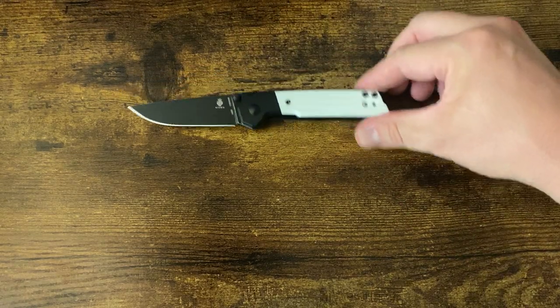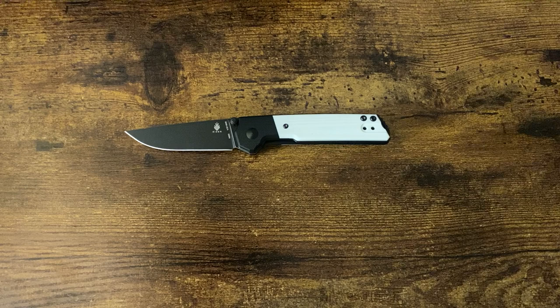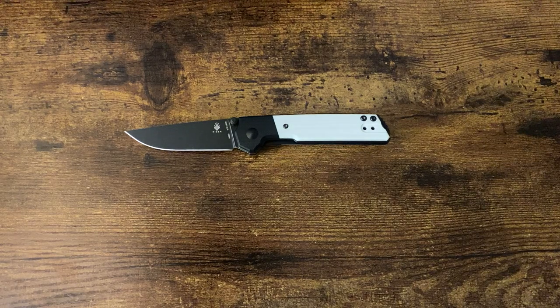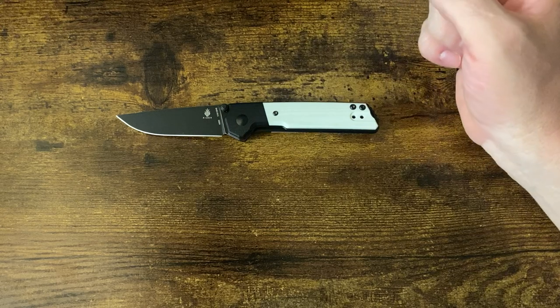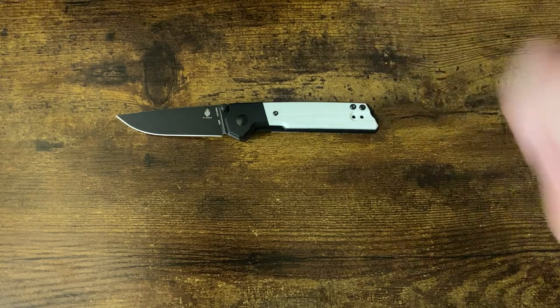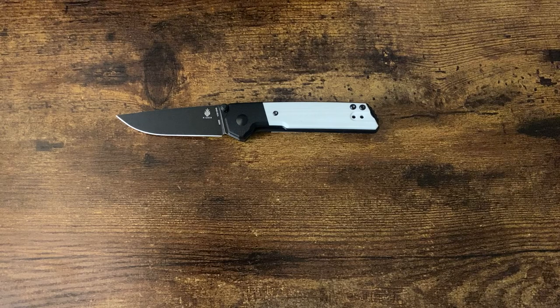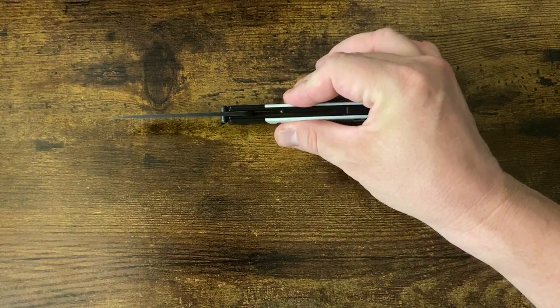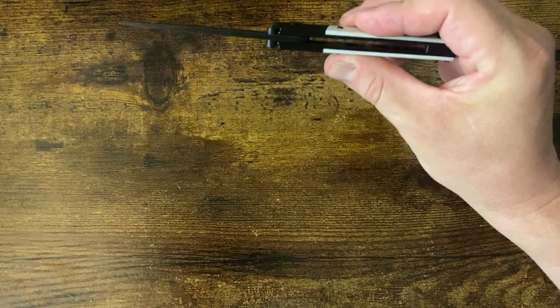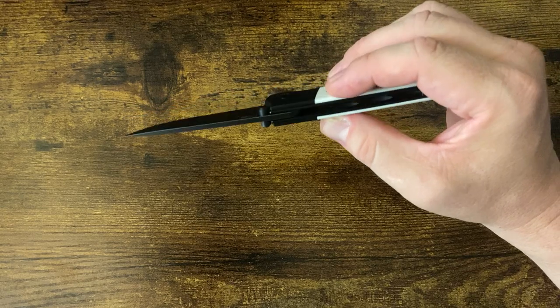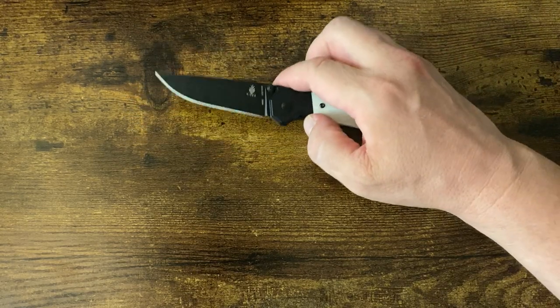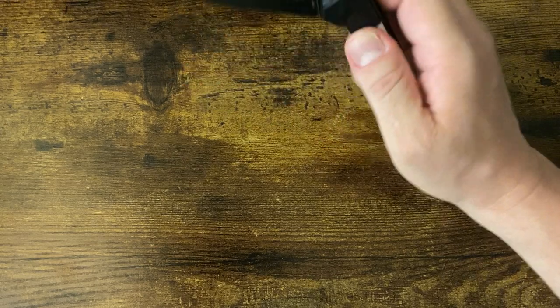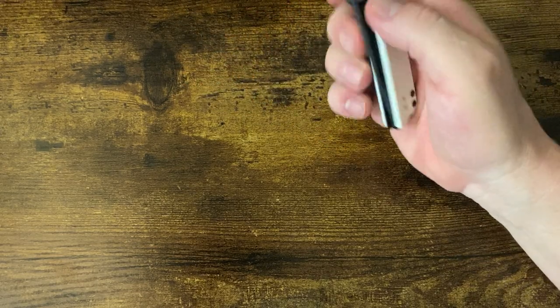Quick specs here: 6 7/8 inches long, blade length is 2 7/8 inches long, and a blade thickness of 0.11 inches. Pretty thin blade stock. It does have a full flat grind, 2.93 ounces according to the specs.